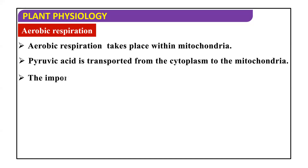The pyruvic acid is transported from the cytoplasm to the mitochondria. Pyruvic acid, which we get from the glycolysis process — that is the EMP pathway — is transported from the cytoplasm to the mitochondria.